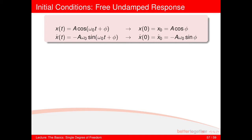For the free undamped equation, when you have initial conditions you need to apply the displacement when time is zero, and find the derivative of the equation with respect to time to find x-dot. If you know the velocity when time equals zero, you can use that equation to find A and the phase phi or alpha, depending on which equation you're using.